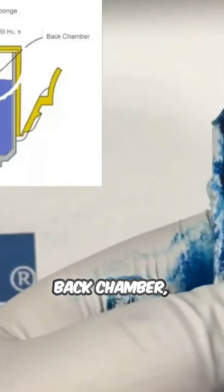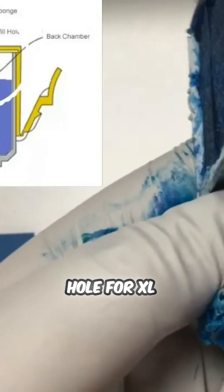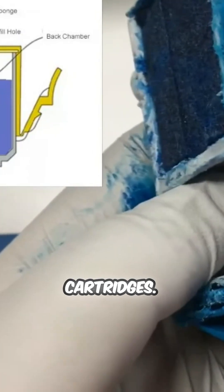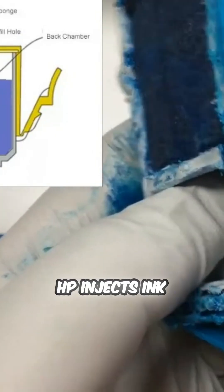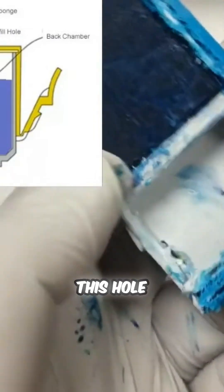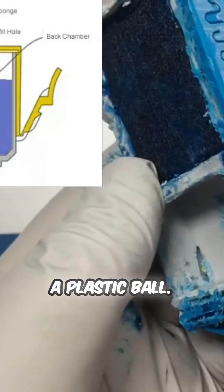On top of the back chamber, there's a refill hole. For XL cartridges, HP injects ink into this hole and then seals it with a plastic ball.